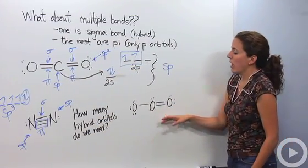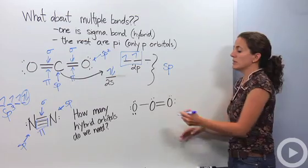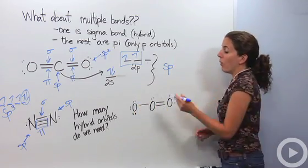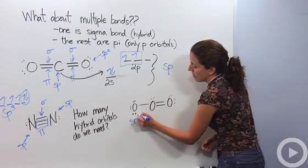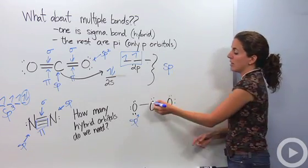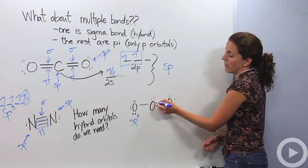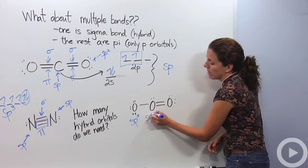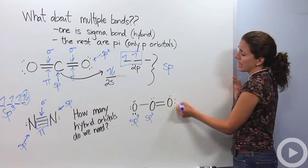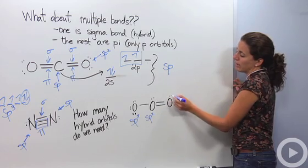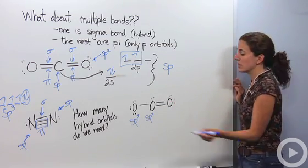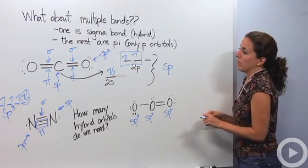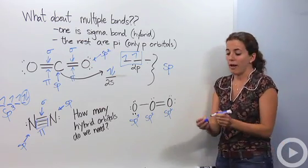If we look at ozone (O3), all three oxygens are a little different. The terminal oxygen has three lone pairs and one sigma bond, so it needs four hybridized orbitals — one from s and three from p — making it sp3. The central oxygen has two sigma bonds and one lone pair, so it needs three hybridized orbitals, making it sp2 — one from s and two from p. The other terminal oxygen also has one sigma bond and two lone pairs, again three hybridized orbitals, so it's sp2. Hopefully that makes hybridized orbitals a bit easier to figure out.